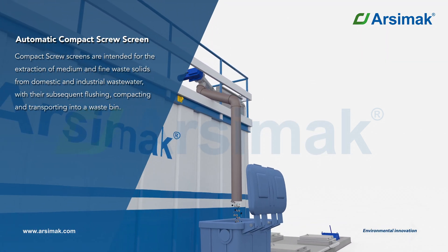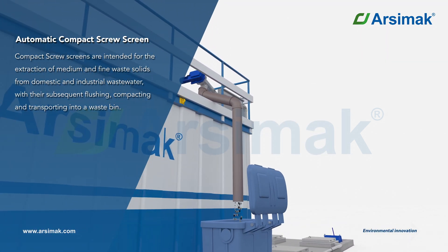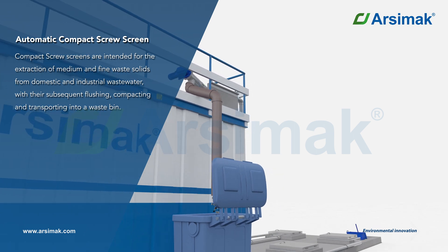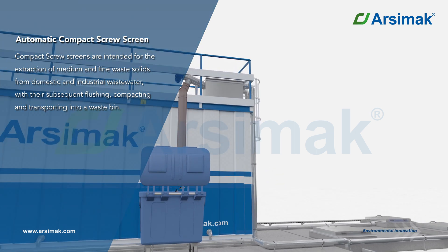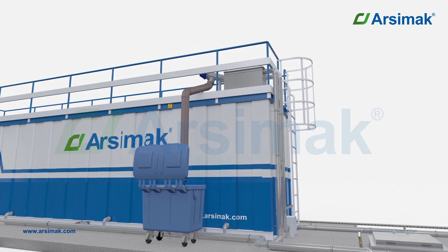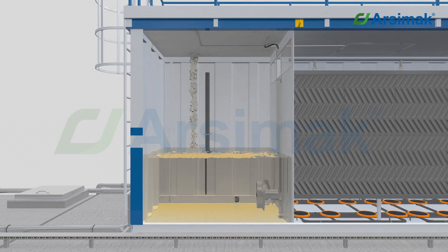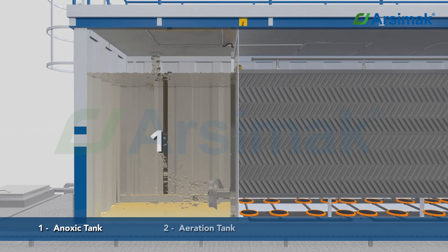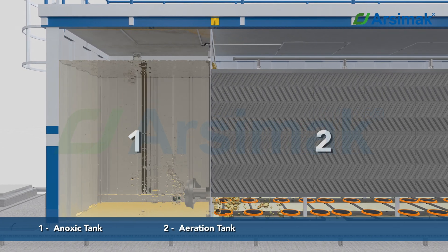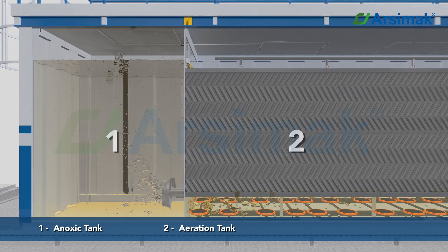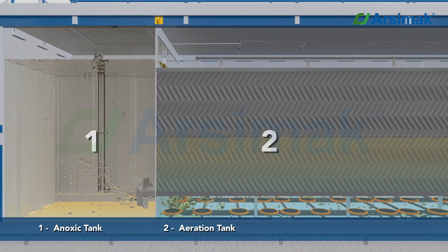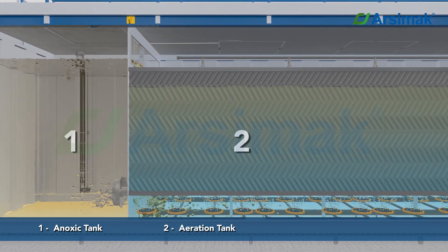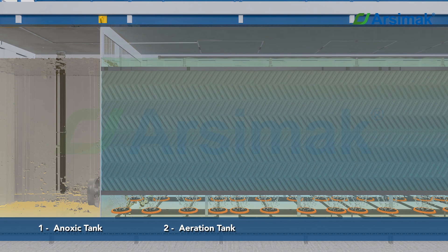In the anoxic basin, the wastewater and returned sludge are mixed homogeneously by a submersible slow mixer and denitrification occurs. The water then passes to the aeration tank, which includes fixed bed media.